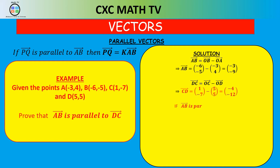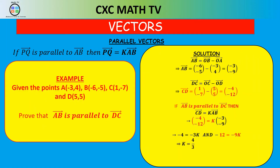If AB is parallel to CD, then CD = K × AB. So (−4, −12) = K × (−3, −9). From the X components: −4 = −3K, giving K = 4/3. From the Y components: −12 = −9K, giving K = 12/9 = 4/3. Since we get the same constant, vector AB is indeed parallel to vector CD.